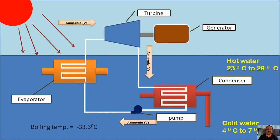We know the boiling temperature of ammonia is minus 33.3 degree centigrade. It means at the temperature of 23 to 29, the ammonia will become vapor. This property of ammonia we are going to use to run the turbine.